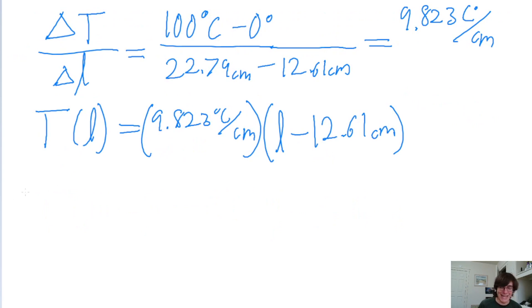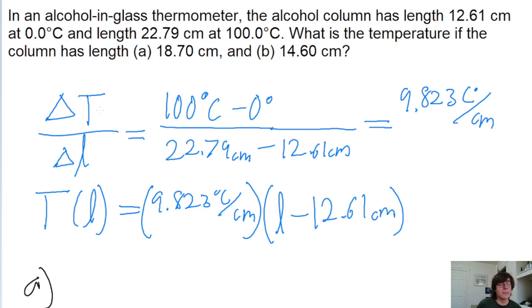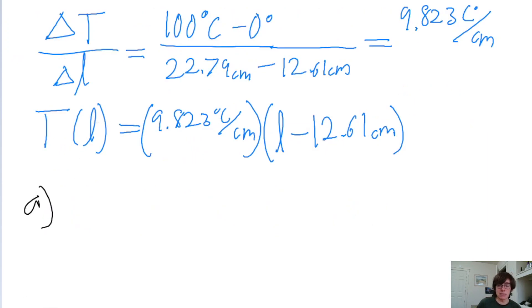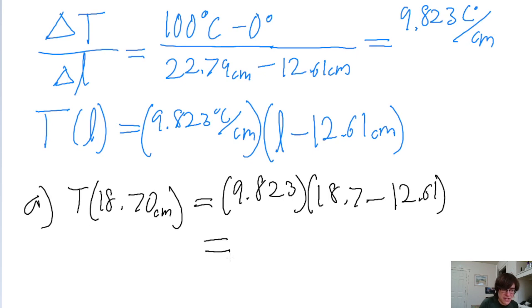So now let's apply this to parts A and B of the problem. So in part A, we're looking for the temperature if the column is at 18.7 centimeters. So for 18.7 centimeters, the temperature is 9.823 times 18.7 minus 12.61. And if we put that into a calculator, then we find a temperature of 59.8 degrees Celsius.